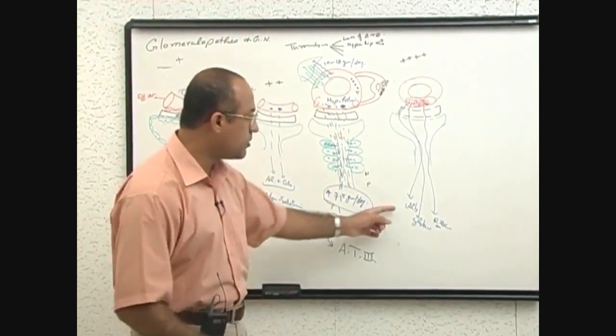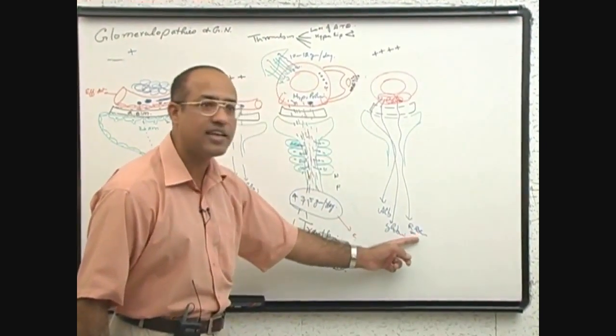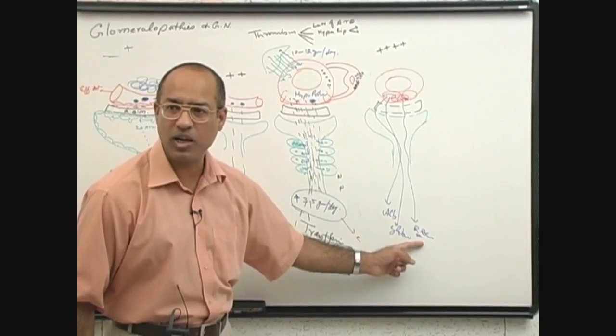So he has albuminuria with globulinuria or non-selective proteinuria. With that he has hematuria. What has this patient developed? Hematuria.